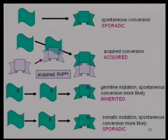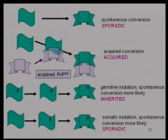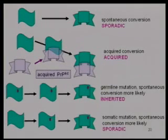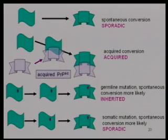You can also have somatic mutation that makes this conversion more likely — that would be another version of the sporadic form rather than inherited. This protein is one of our own proteins, but it is infectious once it has undergone this bad change. The sheep scrapie form seems very poor at converting our protein to the bad form; the bovine form seems rare but more efficient than the sheep at doing it.